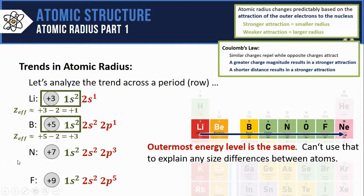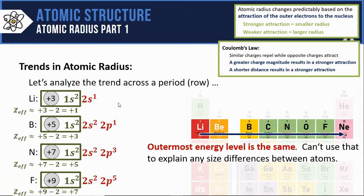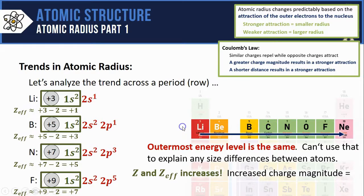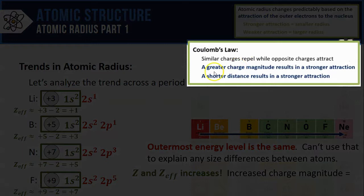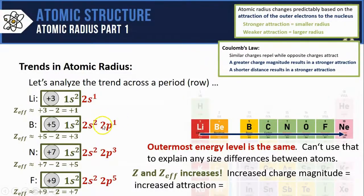In boron the effective nuclear charge is plus 3, nitrogen plus 5, and fluorine plus 7. So finally we have something different about these atoms. The nuclear charges and the effective nuclear charges increase as we move left to right. This increased charge magnitude, go back to our statement from Coulomb's Law, results in a stronger attraction between these outermost electrons in red and that nucleus. That stronger attraction results in the electrons being pulled closer to the nucleus and a smaller radius.